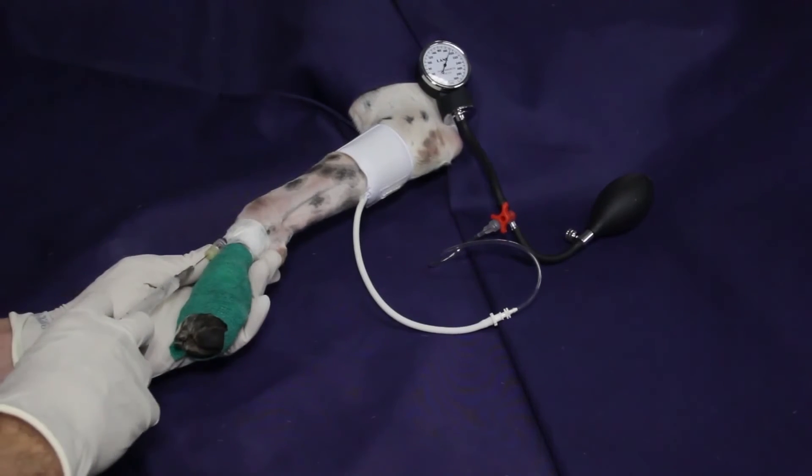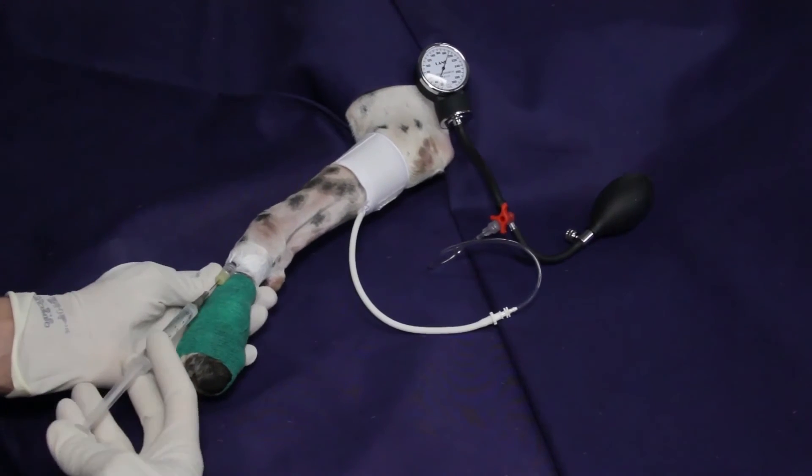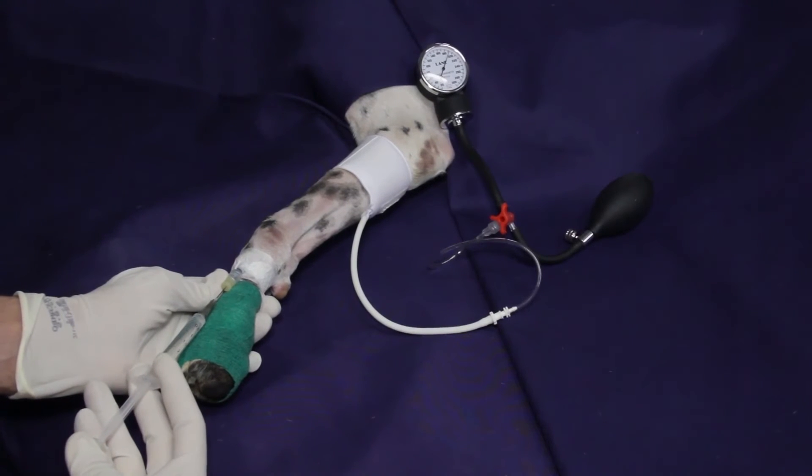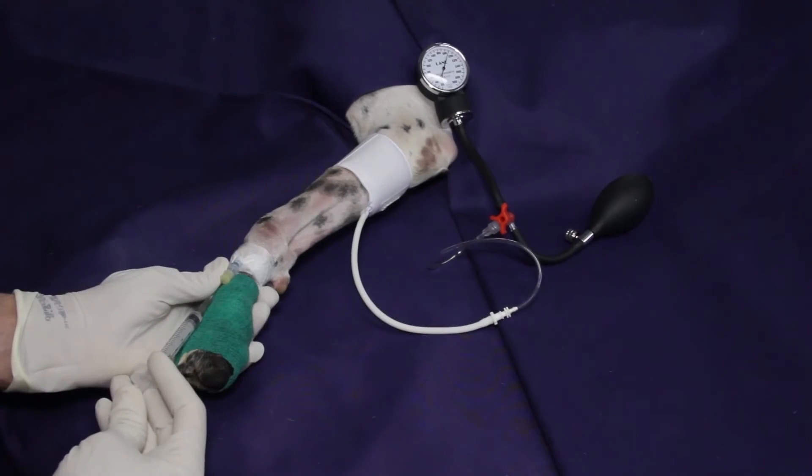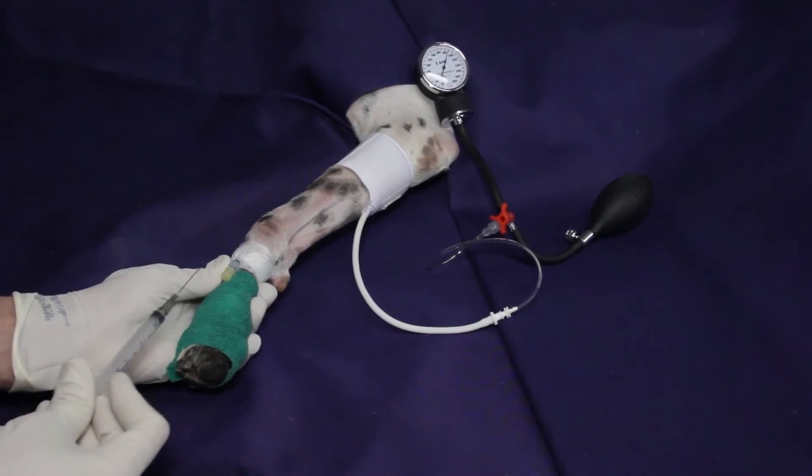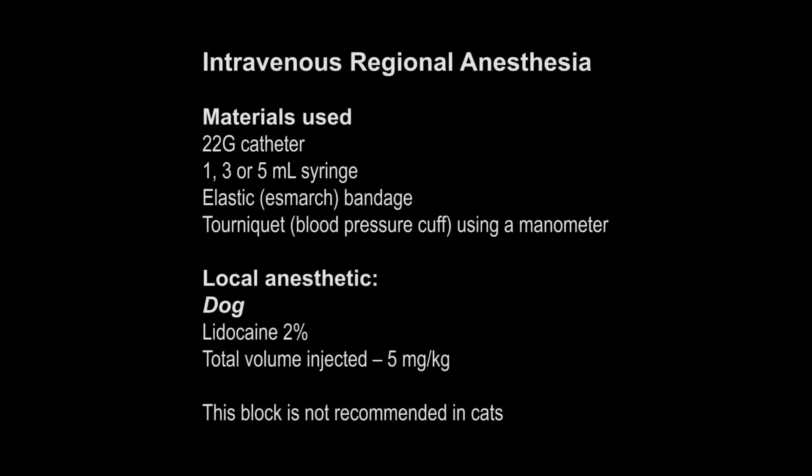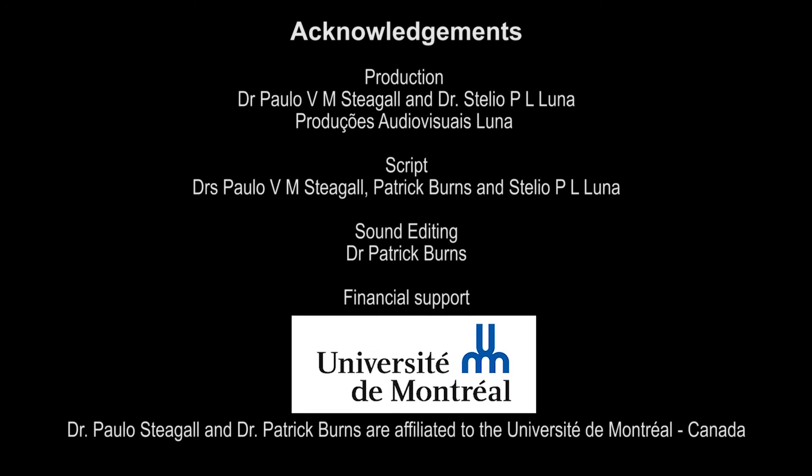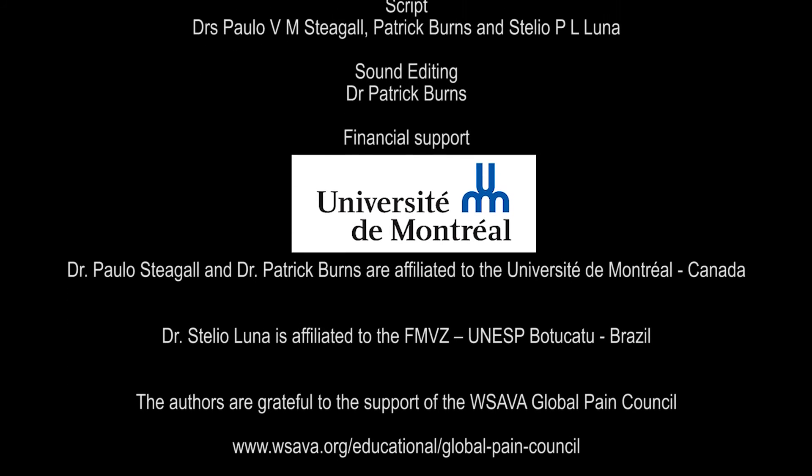Residual analgesia may persist for up to 30 minutes following the removal of the tourniquet. The local anesthetic will produce systemic effects once the tourniquet is removed. The operator must be cognizant of these potential adverse effects. Another form of post-operative analgesia is recommended.